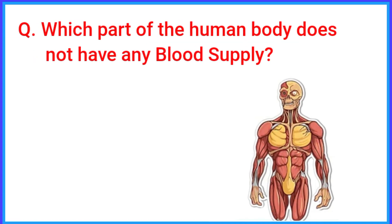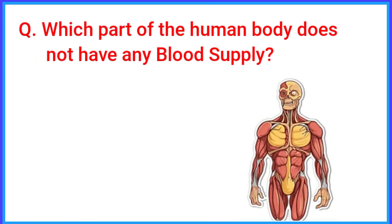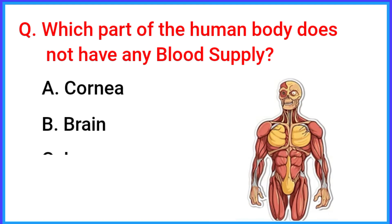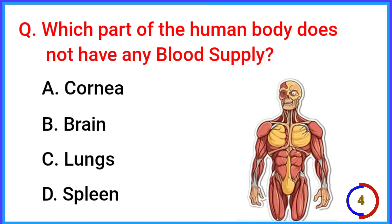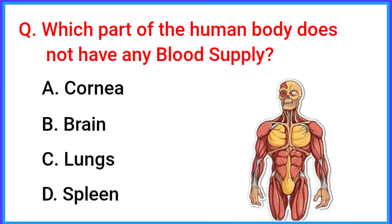Which part of the human body does not have any blood supply? The correct answer is option A: cornea.